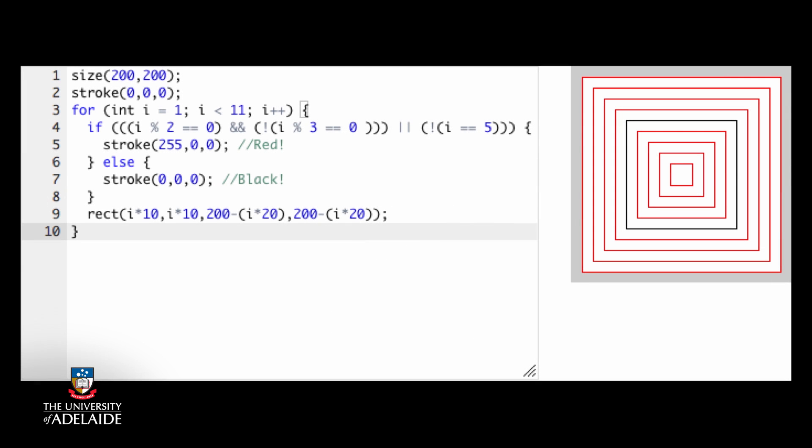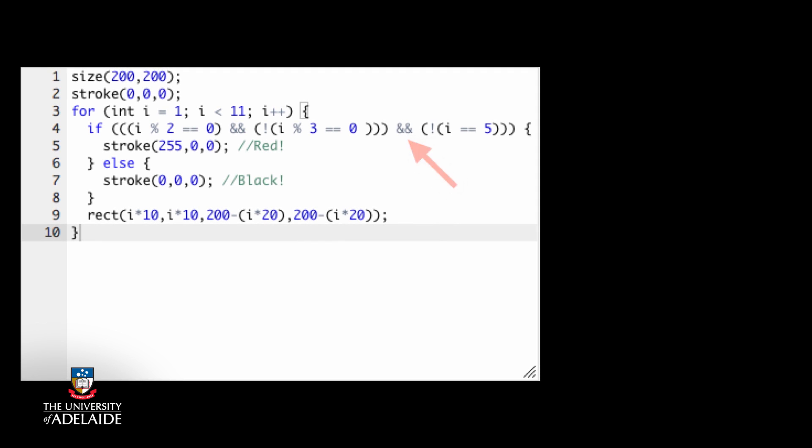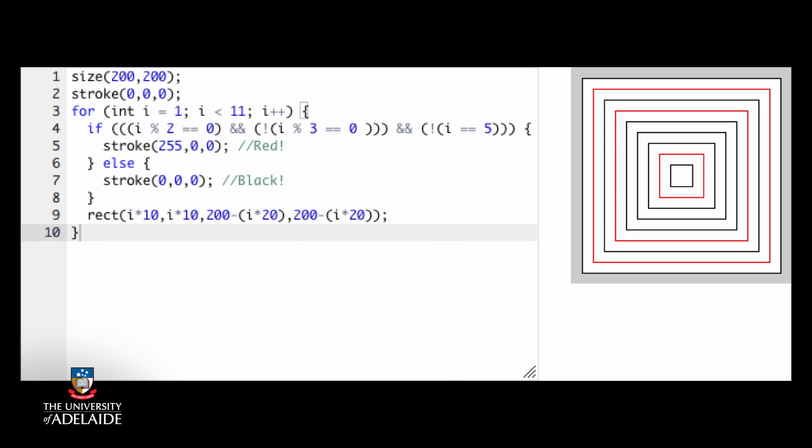What about AND? If we change the conditional to, then we will only draw a red rectangle when both conditions agree that they should. And that looks like this.